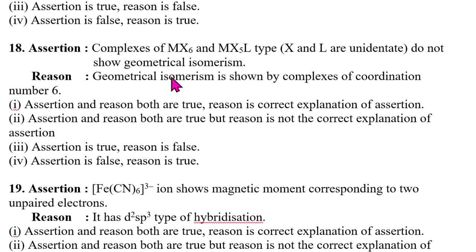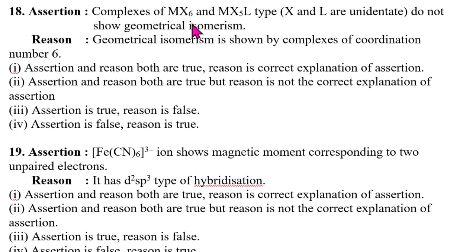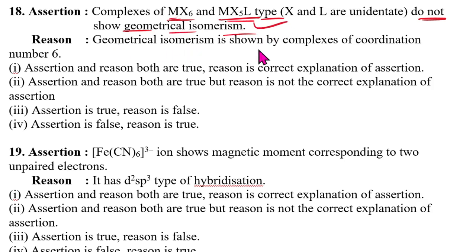Eighteenth question: assertion — complexes of MX₆ and MX₅L type cannot show geometrical isomerism — correct. Reason — geometrical isomerism is shown by complexes of coordination number 6 — this is also correct. But the reason is not the correct explanation for the assertion. Hence the answer is option 2 (both correct but reason does not explain assertion).